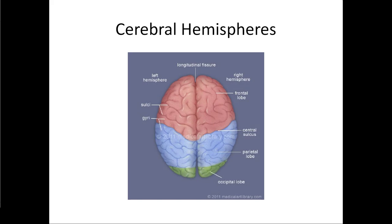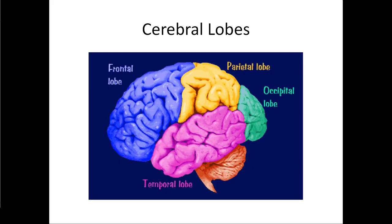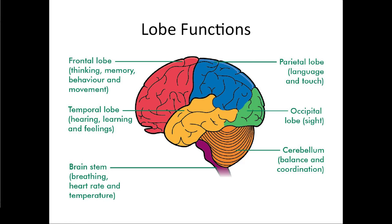The cerebrum is divided into the left hemisphere and the right hemisphere, with the longitudinal fissure running down and dividing them mostly in half. Each of these four cerebral lobes, named after the bones of the skull, has somewhat different functions. The frontal lobe is important for thinking, memory, behavior, and movement.